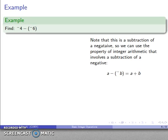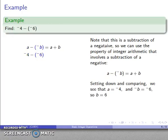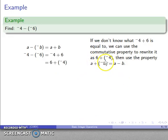For negative 4 minus negative 6: this is a subtraction of a negative, so I use the property that a minus negative b is the same as a plus b. Writing down the rule and comparing: a is negative 4, b is 6, giving negative 4 plus 6. Maybe I don't know what that is, so I use the commutative property to rewrite it as 6 plus negative 4. Then applying the property that a plus negative b equals a minus b gives 6 minus 4, which I know equals 2.